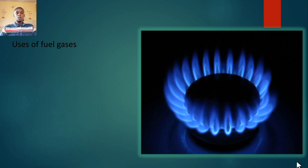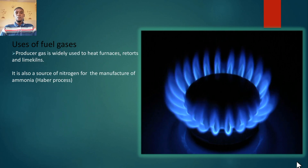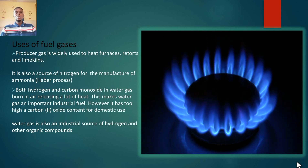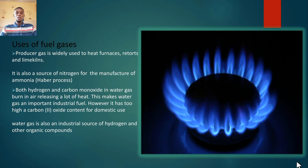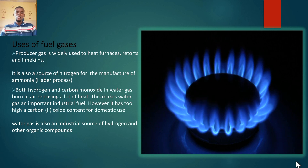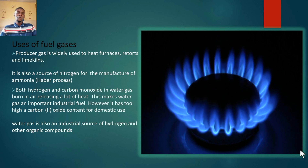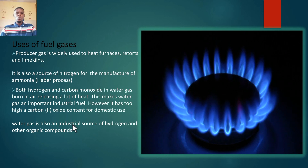What are the uses of these fuel gases? Starting with producer gas: it is widely used to heat furnaces, retorts, and lime kilns. It is also a source of nitrogen for the manufacture of ammonia — we carry out ammonia production using a process known as the Haber process. So producer gas is used as an industrial fuel and as a source of nitrogen for producing ammonia, which is an important chemical in the field of chemistry.